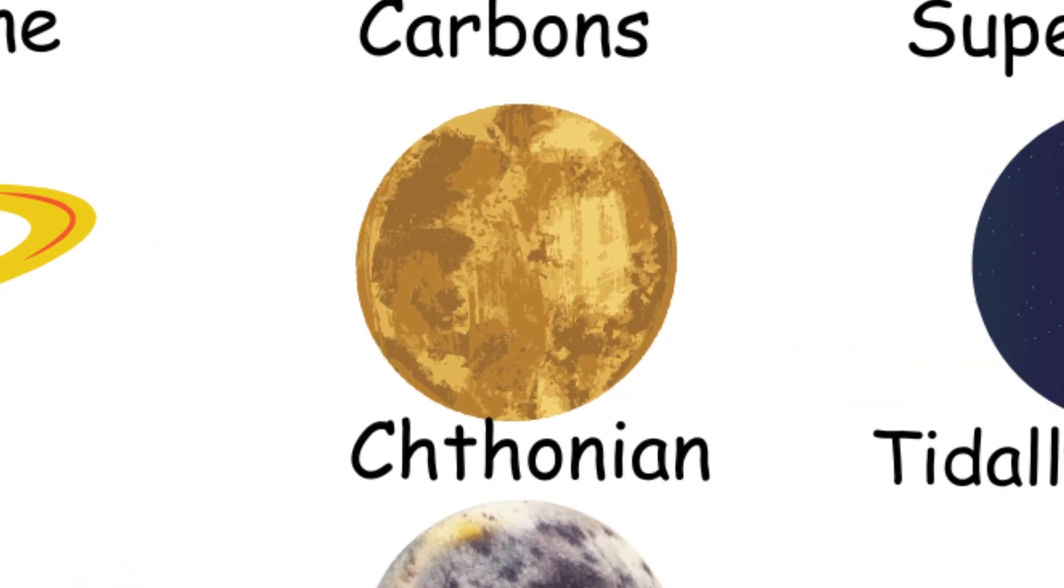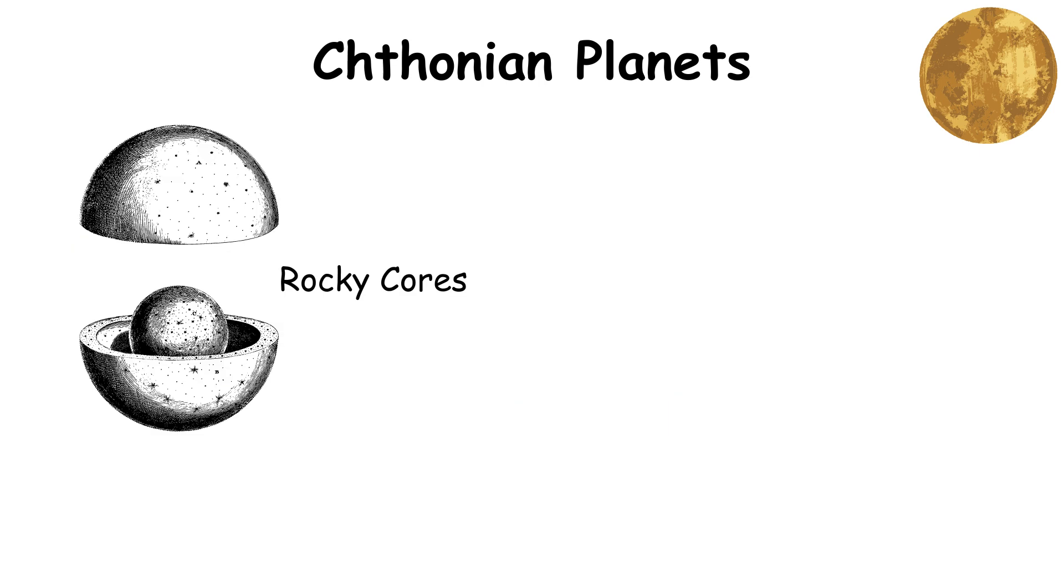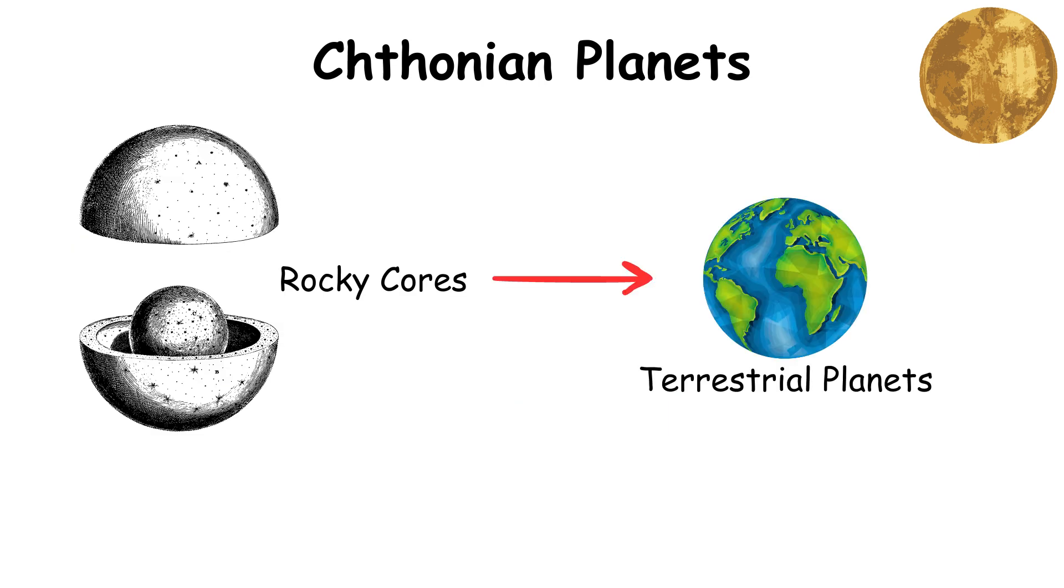Chthonian planets are remnants of gas giants that have lost their outer atmospheres due to close proximity to their parent stars. They typically have rocky cores resembling terrestrial planets but with much higher masses.